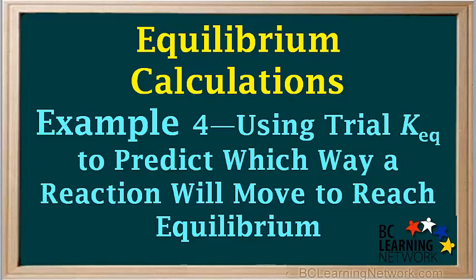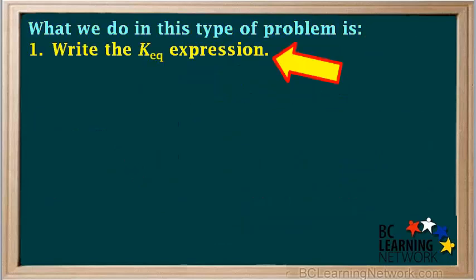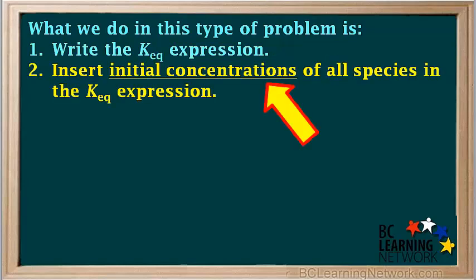In this example, you are given initial concentrations of all species and the value of Keq. You are asked to predict which way the reaction will move as the system approaches equilibrium. What we do in this type of problem is start by using the balanced equation to write the Keq expression. If initial concentrations need to be calculated from moles or grams first, we do that.